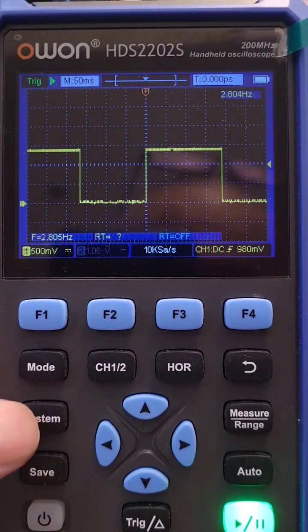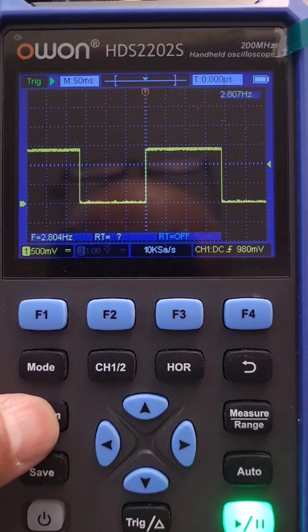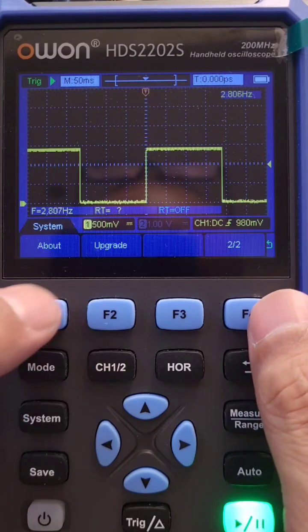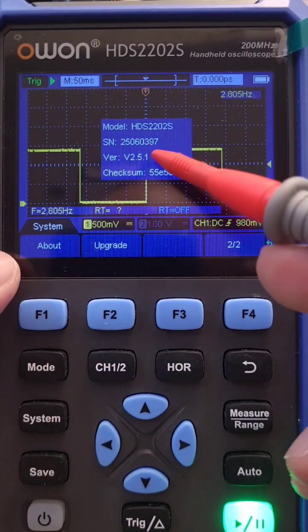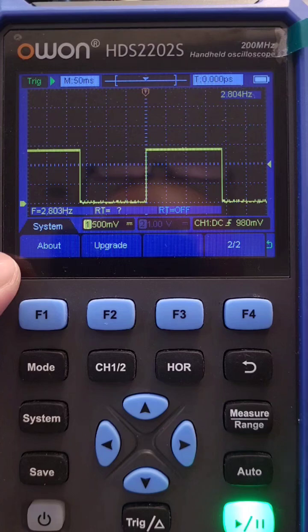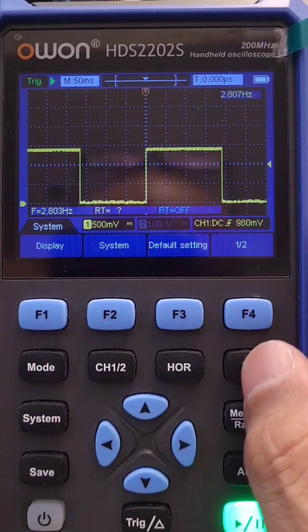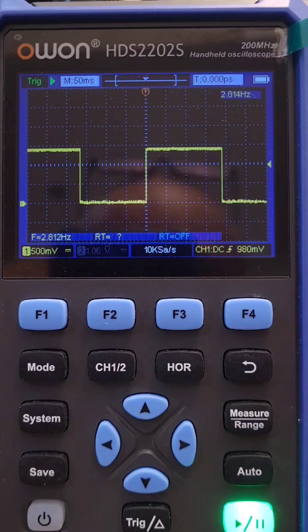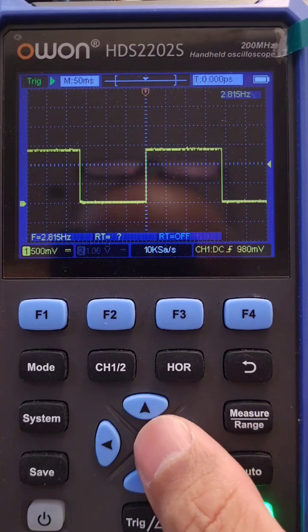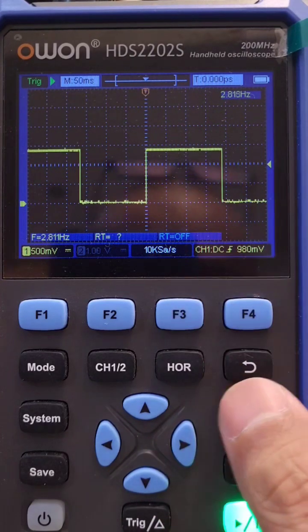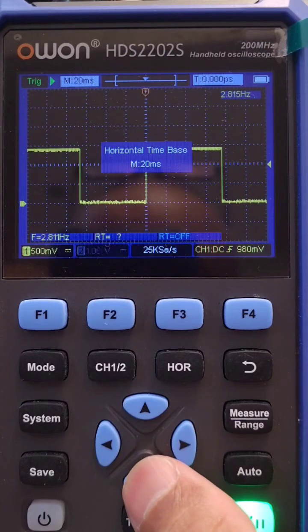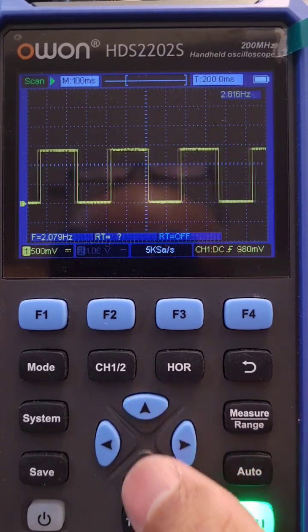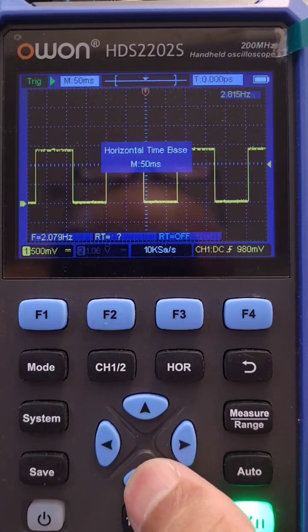So, OWON HDS2202S running about version 2.51. On screen we have a square wave, and today's video is about its saving function. We have here a square wave, we can get it moving a bit if you want to see it move. That's not what I want to show actually, but yeah, moving square wave.